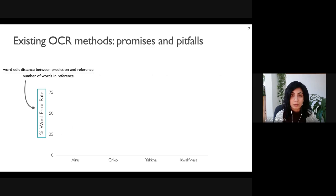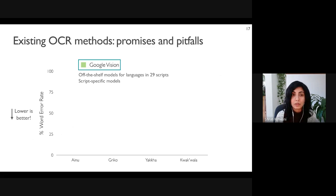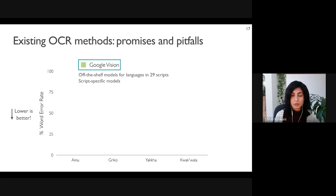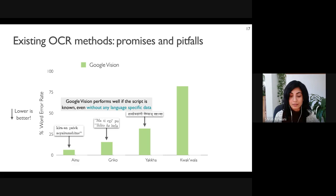We measure OCR performance in terms of Word Error Rate — the word edit distance between the prediction and the reference divided by the total number of words. Lower is better. The first system we look at is Google Vision OCR, an off-the-shelf tool with models for many languages in 29 scripts, including script-specific models for Latin, Devanagari, etc. Though the tool doesn't directly support any of our evaluation languages, some use the same script as high-resource languages, and we see that in the performance results.